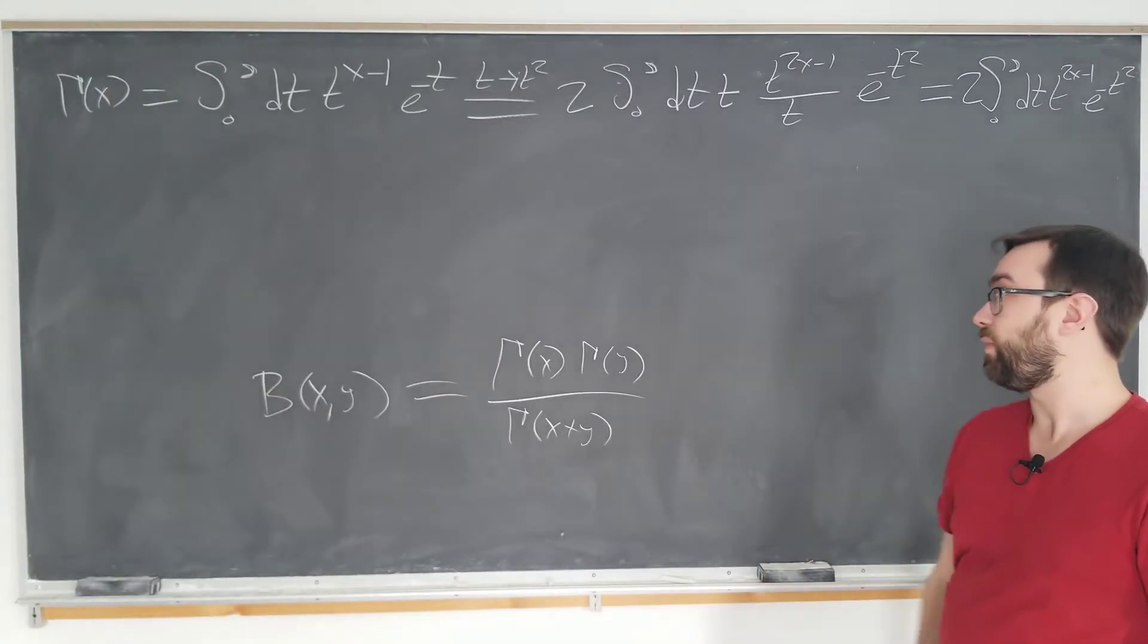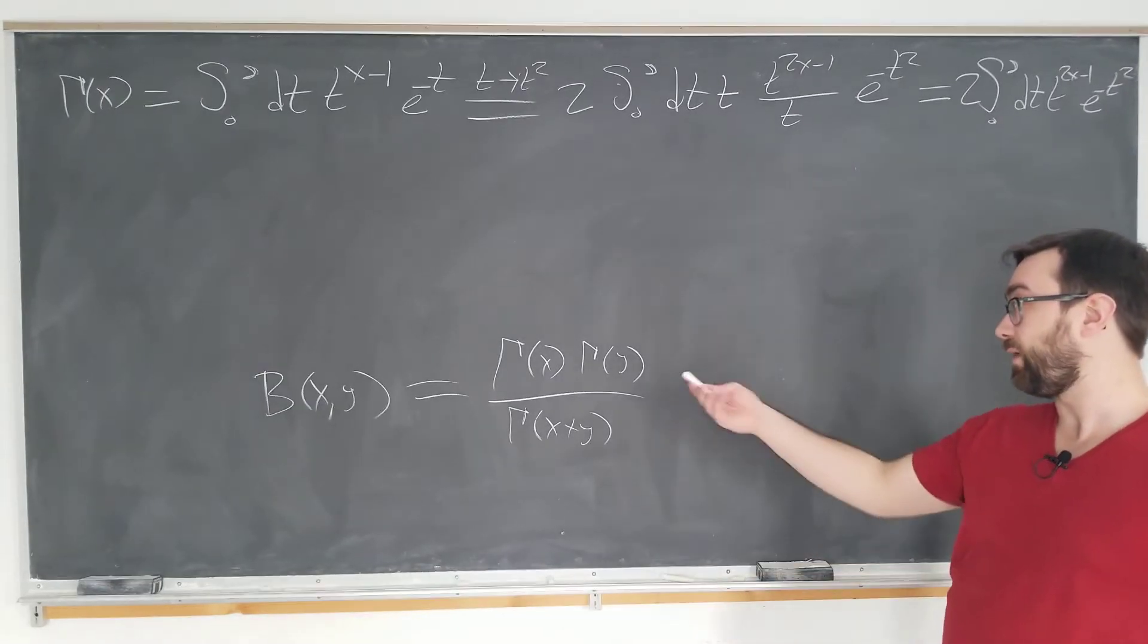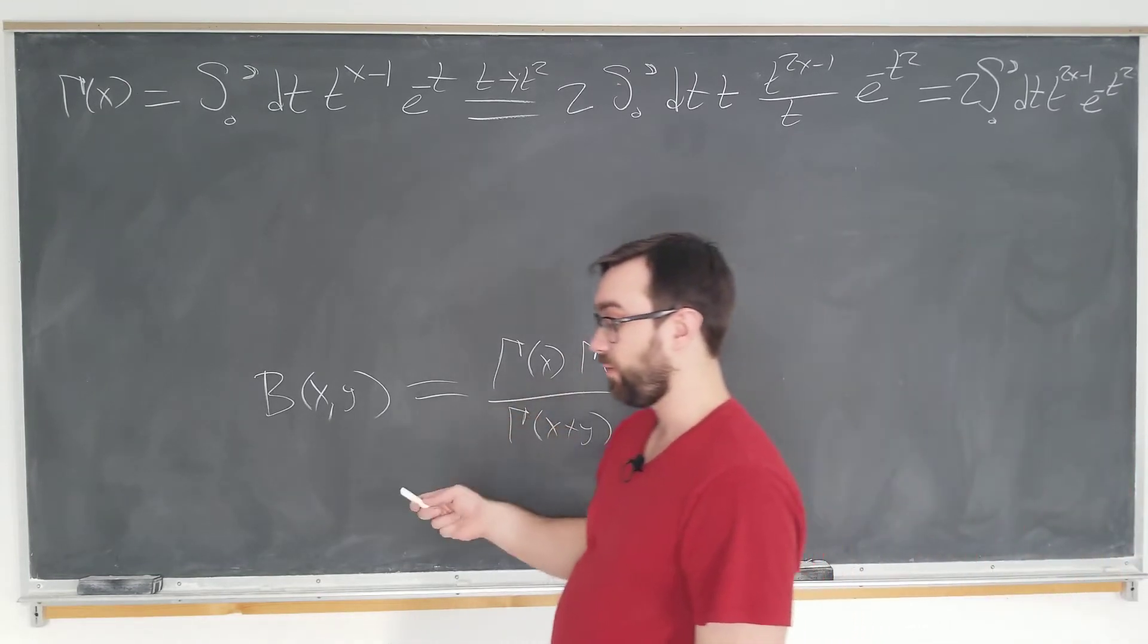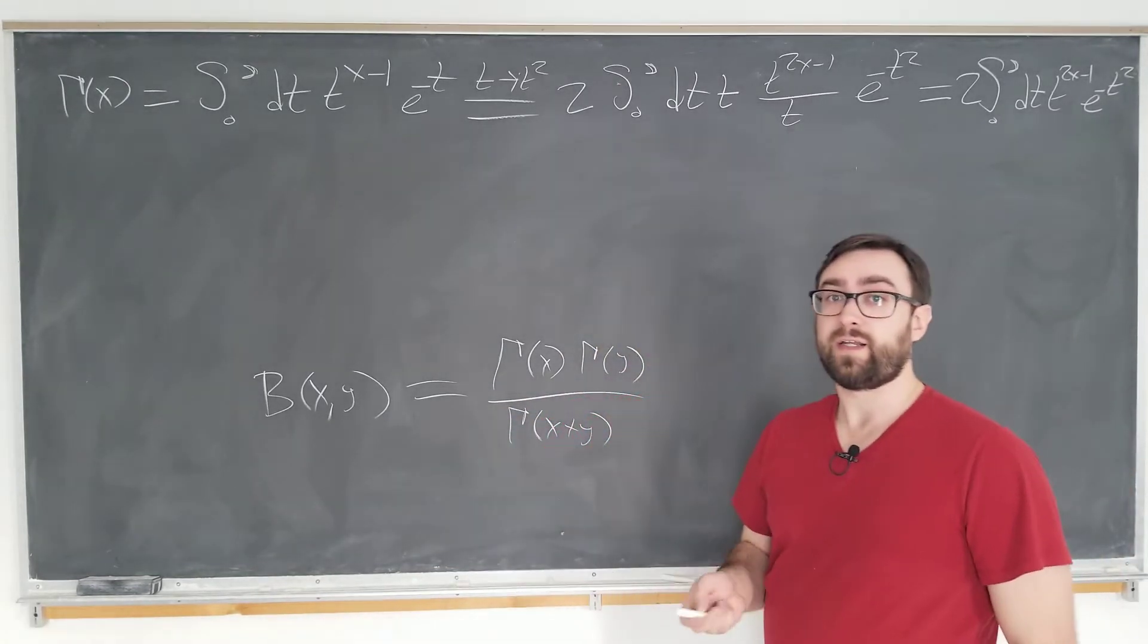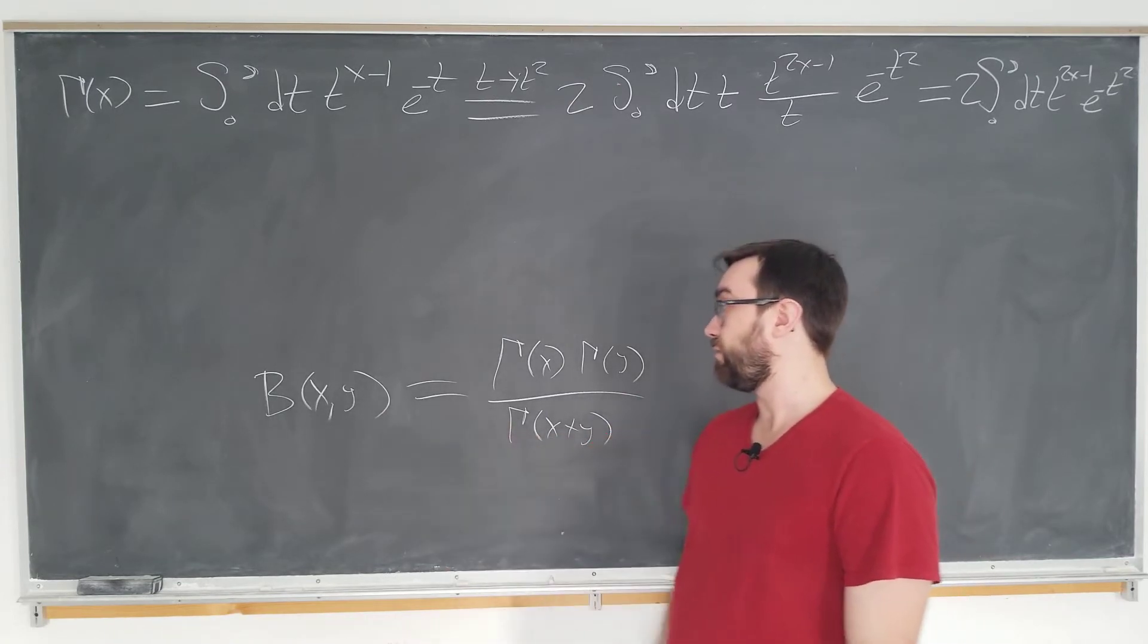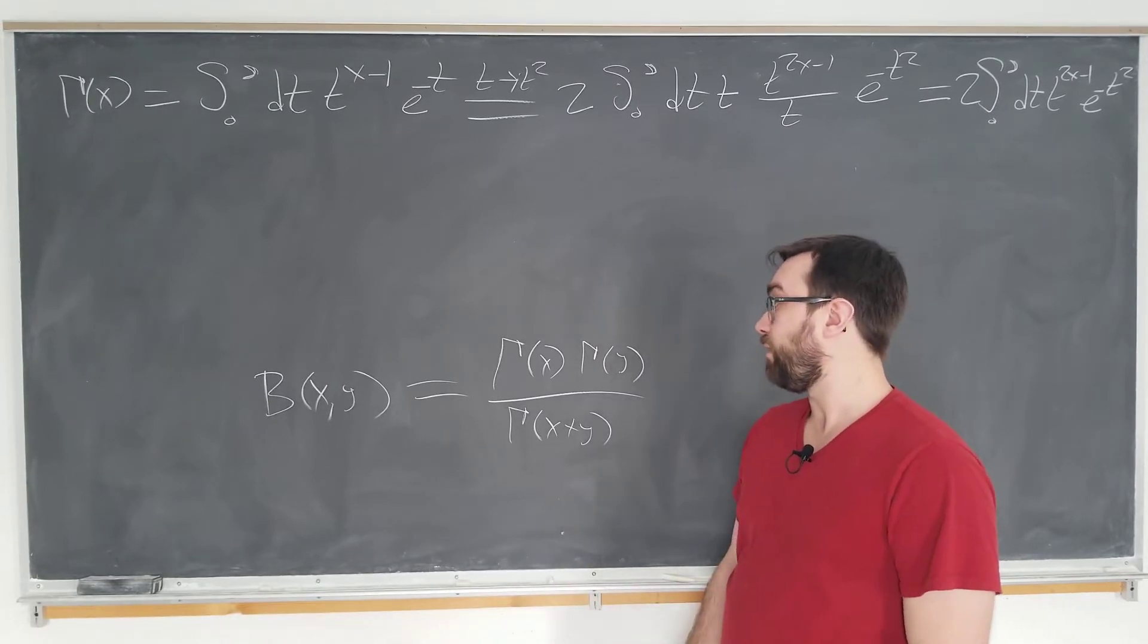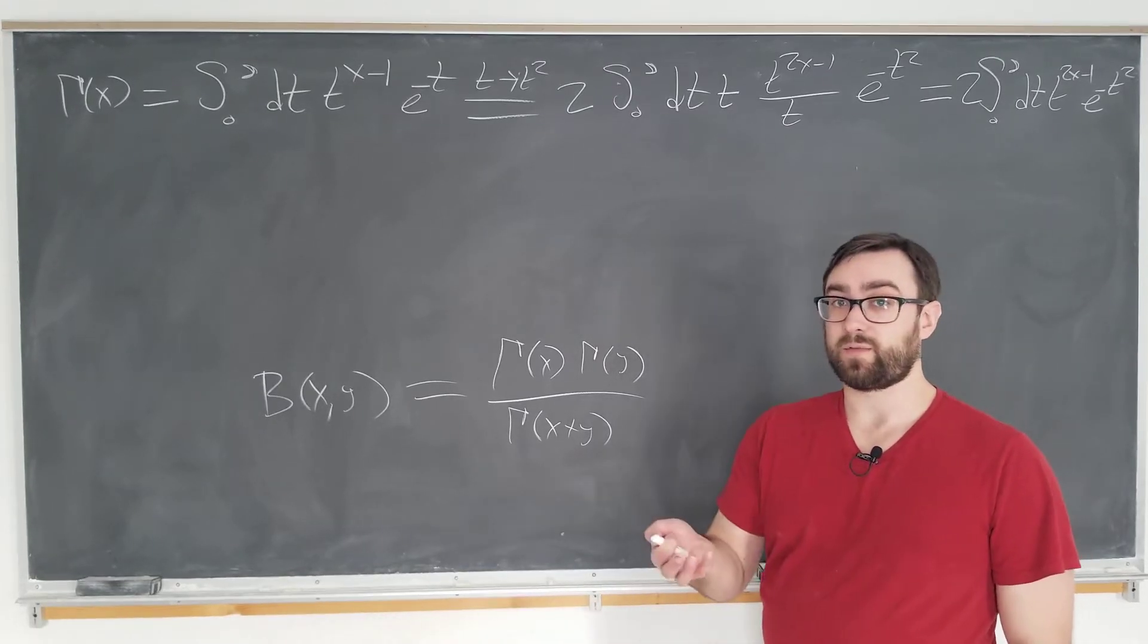We make this transformation, we have an odd power of a t multiplied by a Gaussian. Seemingly more complicated, but we're going to see that the symmetry properties of e to the minus t squared actually help us evaluate the beta function.